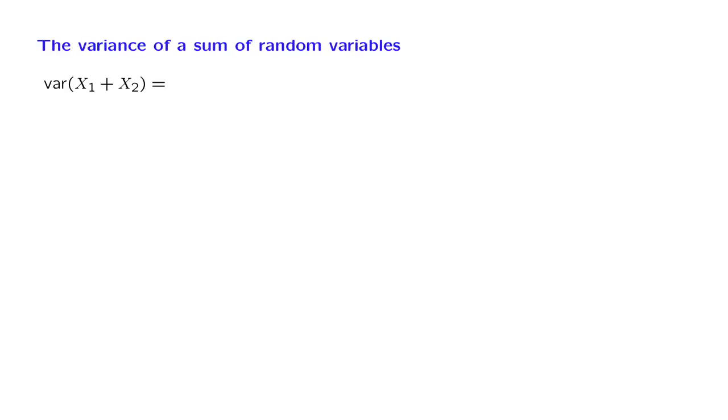But let us now look at what happens in the case where we may have dependence. By definition, the variance is the expected value of the difference of the random variable we're interested in from its expected value, squared.